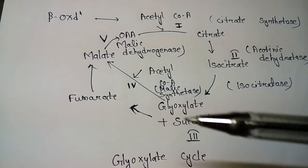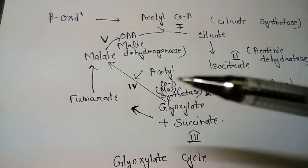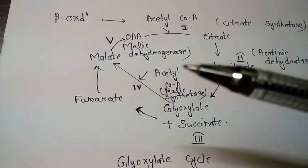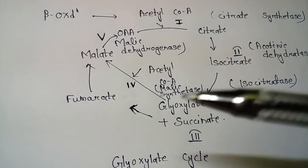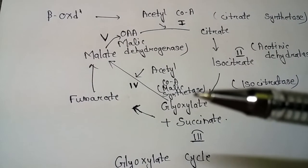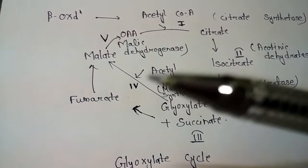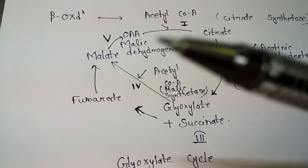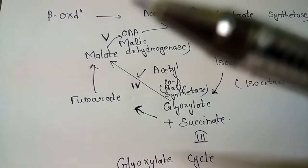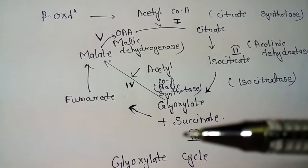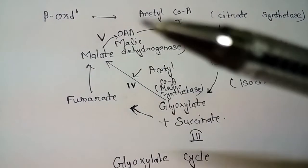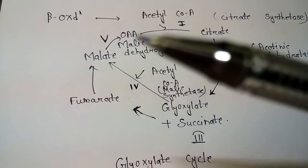In the fourth step, glyoxylate binds with another acetyl coenzyme A to form malate, and the enzyme required for this reaction is malate synthetase. Then the malate, with the help of malate dehydrogenase, forms oxaloacetic acid again. The succinate follows the normal Krebs cycle reaction and forms oxaloacetic acid.